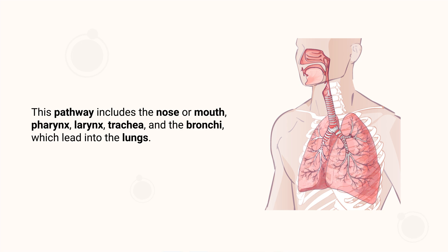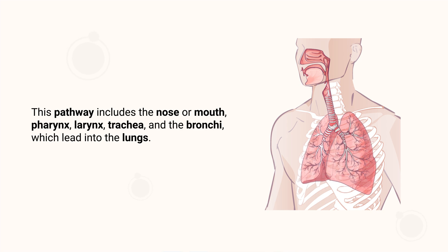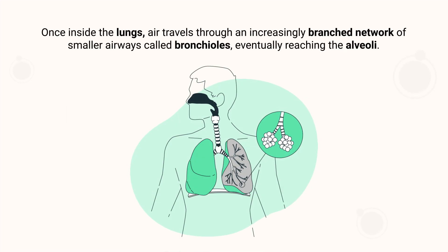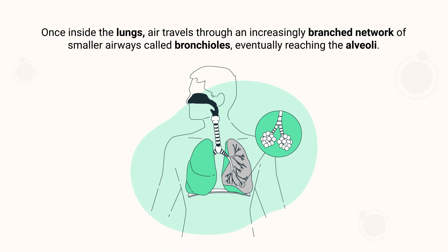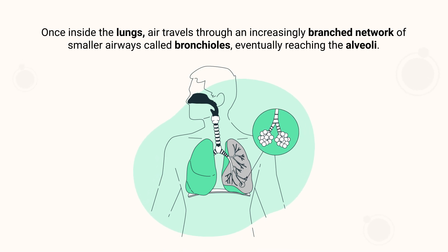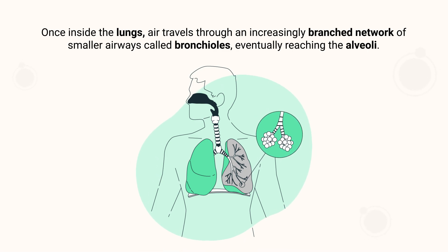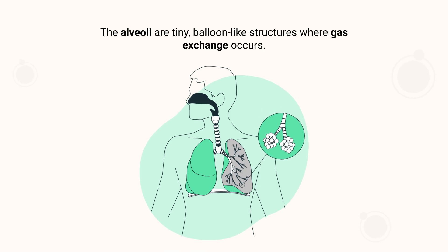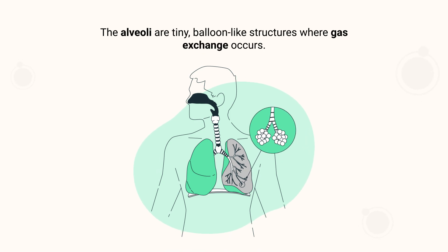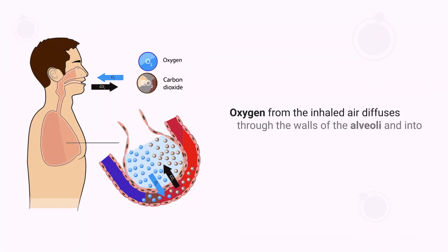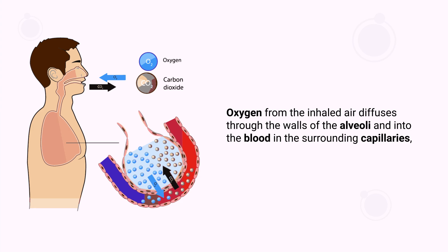This pathway includes the nose or mouth, pharynx, larynx, trachea, and the bronchi, which lead into the lungs. Once inside, air travels through an increasingly branched network of smaller airways called bronchioles, eventually reaching the alveoli.